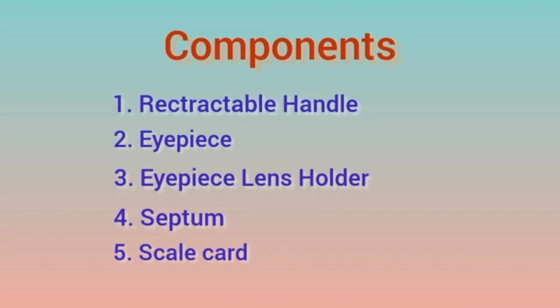The components of Maddox Wing are: retractable handles, which we use to hold the Maddox Wing; eyepiece, which the patient sees through; and an eyepiece lens holder. When the patient wears glasses and cannot focus, we can place a corrective lens in the lens holder so the patient can clearly see the near object and read the scale. There is also a septum, which dissociates the image — the patient's right eye will see one thing and the left eye sees something else. And there are scale cards, which we will discuss further.